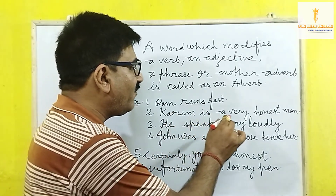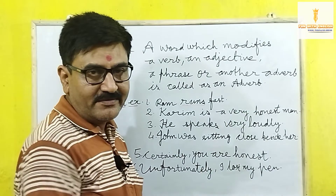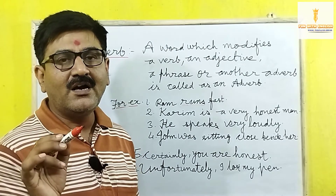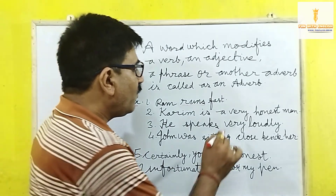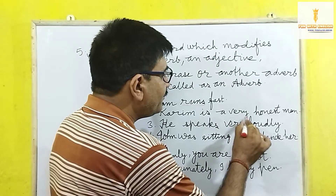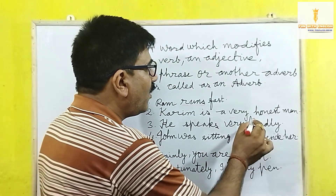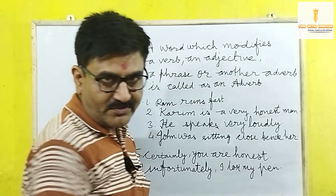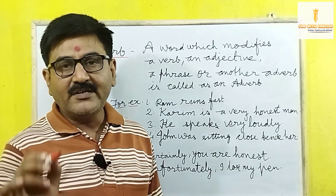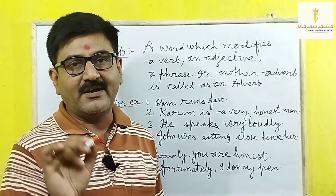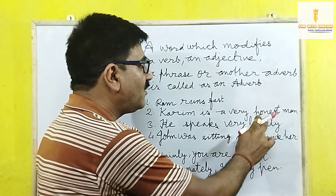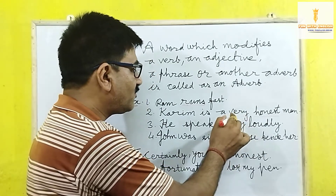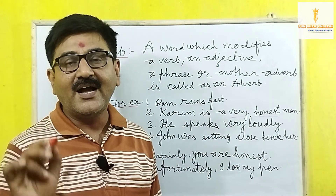Now, 'Kareem is a very honest man.' करीम एक बहुत ही ईमानदार आदमी है। यहाँ 'very' honest को qualify कर रहा है। Honest यहाँ adjective है और very उसे qualify कर रहा है। That's why 'very' is an adverb — यह adjective को modify कर रहा है।